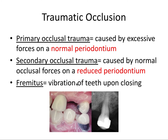Fremitus is vibration of teeth upon closing. It's a phenomenon that can be used to diagnose traumatic occlusion upon clinical examination. Heavy contact or occlusal interference between teeth can manifest quite apparently on a radiograph. It typically first manifests as a widened PDL, either apically or marginally or both. In more advanced cases, you can easily detect a bony defect, probably two or three wall.